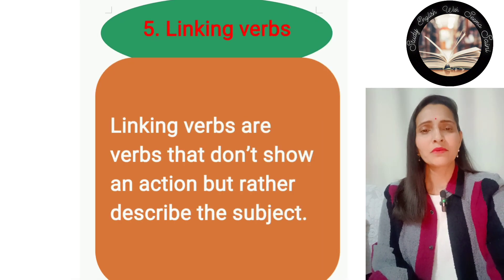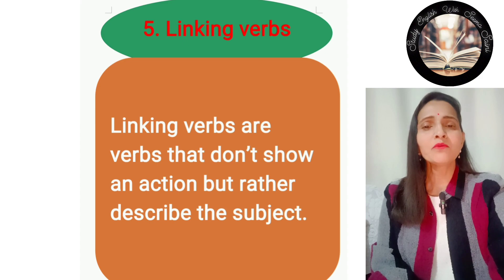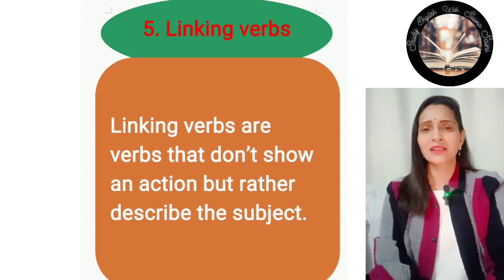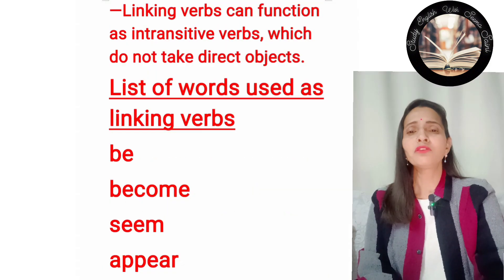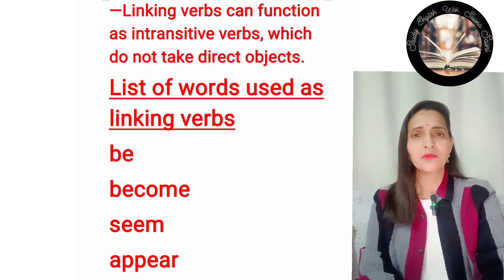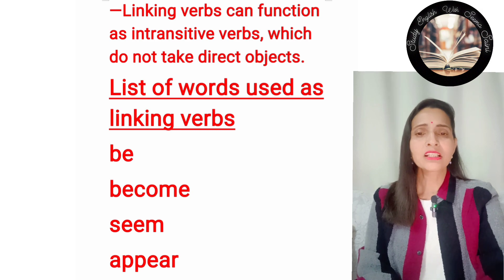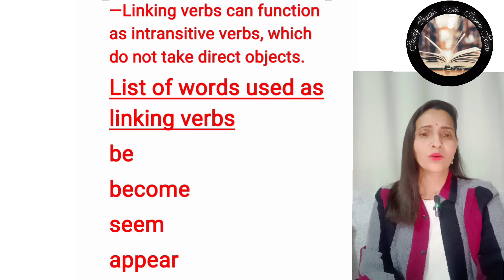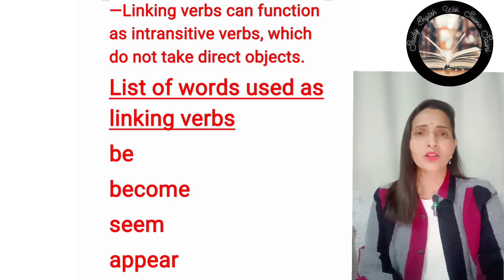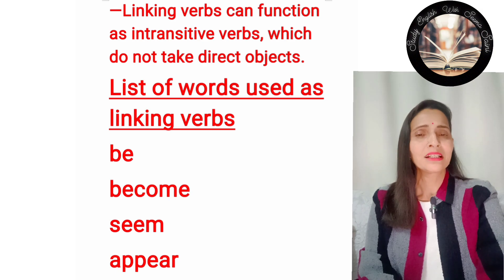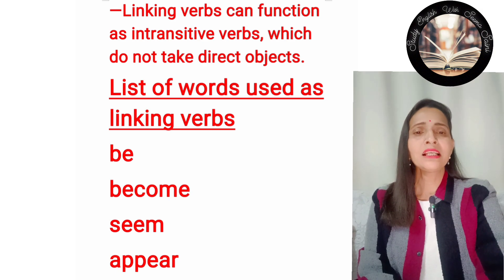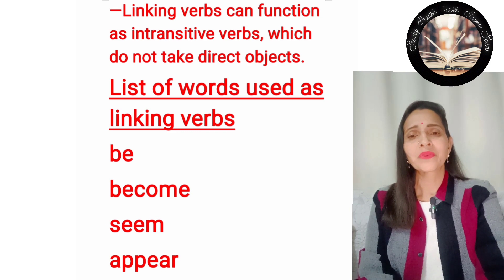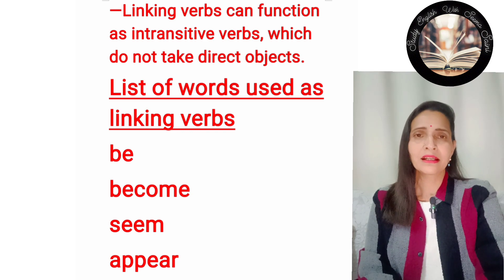Next: linking verb. Linking verbs are verbs that don't show an action but rather describe the subject. Linking verbs can function as intransitive verbs, which do not take a direct object. List of linking verbs: be, become, seem, appear, etc.